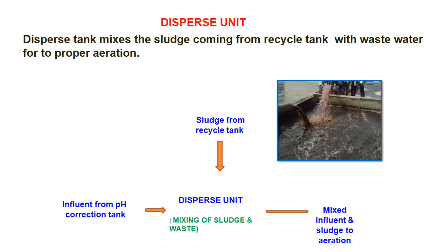Here is the dispersive unit or dispersed tank — it mixes the sludge coming from the recycled tank with wastewater for proper aeration. The discharge water is coming in and the sludge from the recycled tank is mixing with it. That is the aerobic treatment — the activated sludge acts on the wastewater, further reducing waste matter content and BOD.